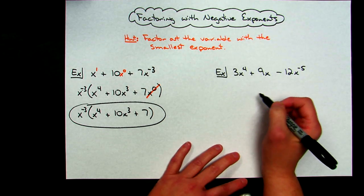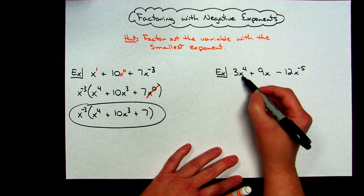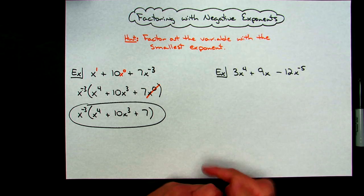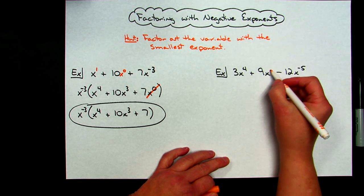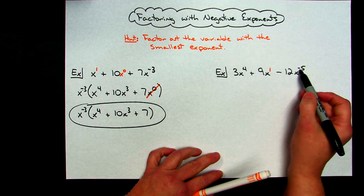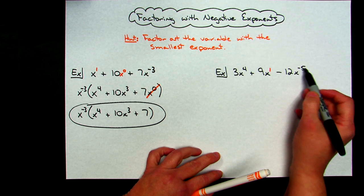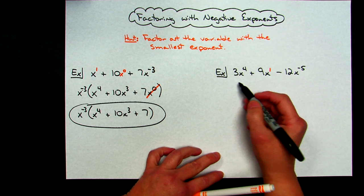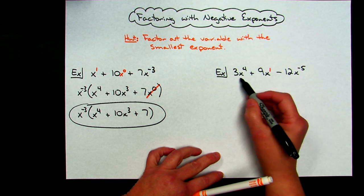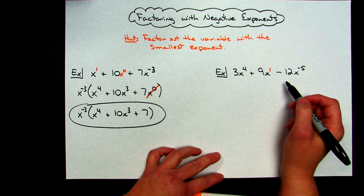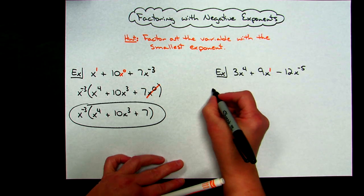And then here on the second example I'm going to do the exact same thing. I'm going to take a look at all those variables and find the smallest one. Again here, any plain x will have an exponent of 1, so if you want to put that in there so you can compare all your exponents: 4, 1, and -5. -5 is going to be my smallest exponent, so I will take out x^(-5). I also need to take a look at those coefficients. I have 3 and 9 and -12. Greatest common factor I can take out there is going to be 3.